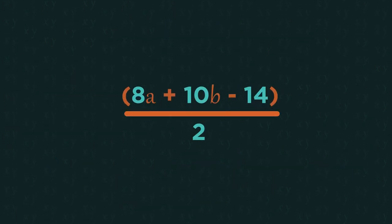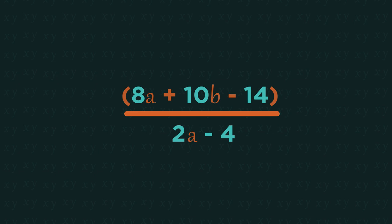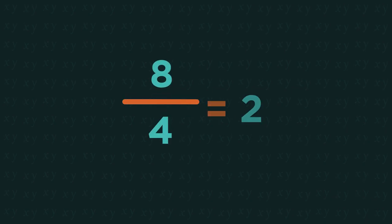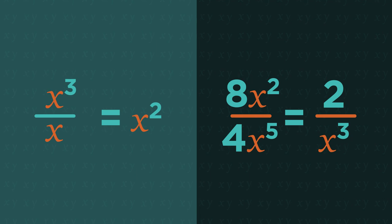Dividing a polynomial by an integer or an expression is really just another way of simplifying. There isn't actually anything new to learn, you just need to be able to simplify numbers and know how to divide with indices.